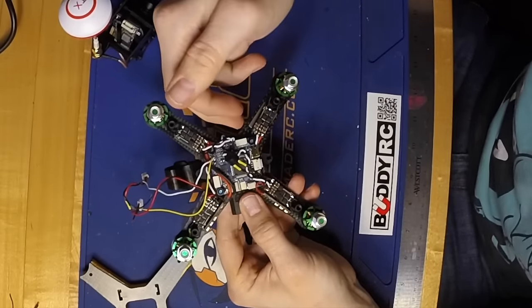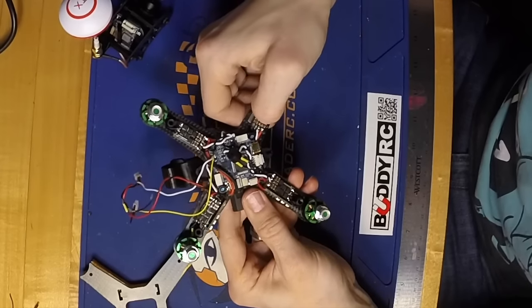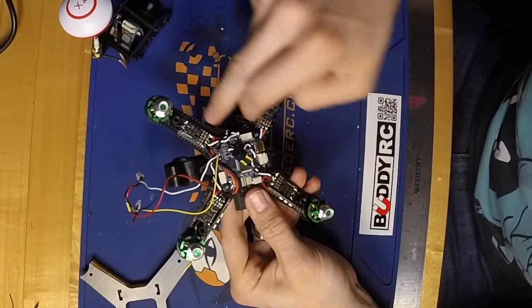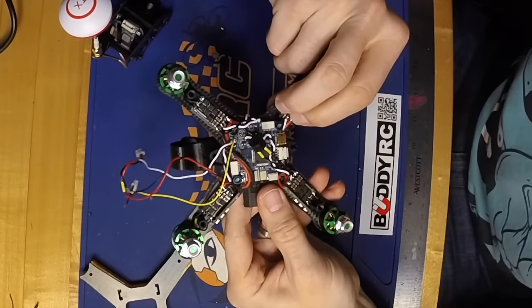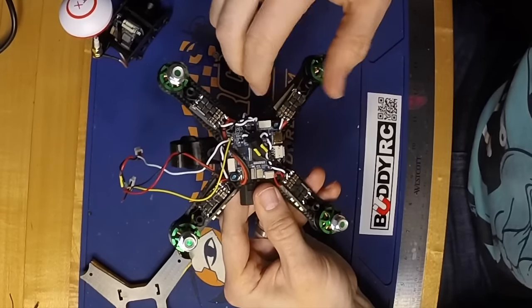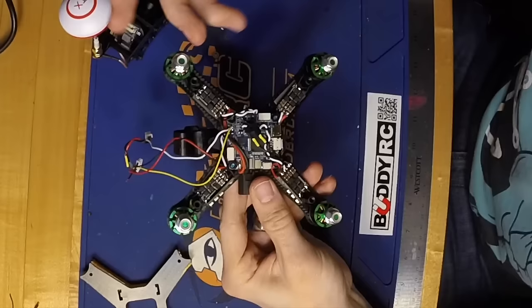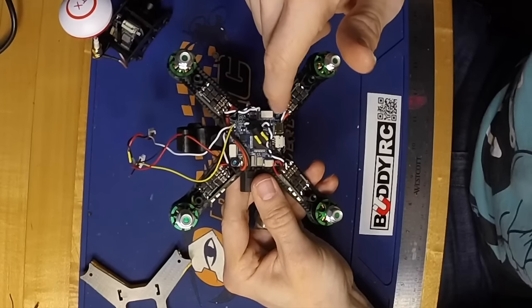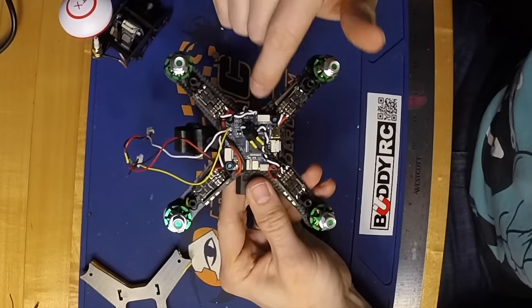I took the wires from the PDB and soldered them onto the power and ground terminals for each ESC. I used those power and ground terminals off the ESC to power everything else that I needed, rather than running them off the PDB and having a bunch of wires coming up from the bottom.